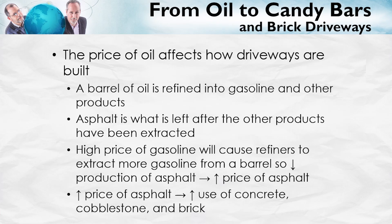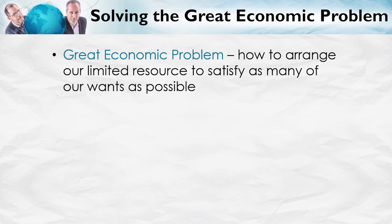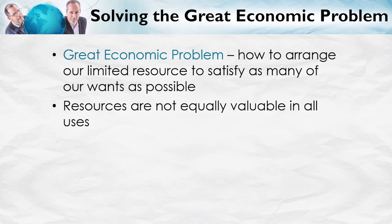Who would have thought that concrete is a substitute for oil? Yet in fact it is. That's what the market system does — it causes us to rearrange our choices in order to get the most value from our resources, and that may involve substituting concrete for oil. So here's the big picture: the great economic problem is how to arrange our limited resources to satisfy as many of our wants as possible. Resources are not equally valuable in all uses, so we must choose where to allocate our resources in order to get the most value out of them.